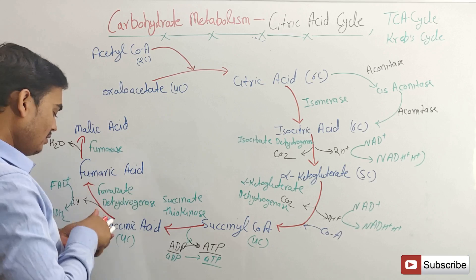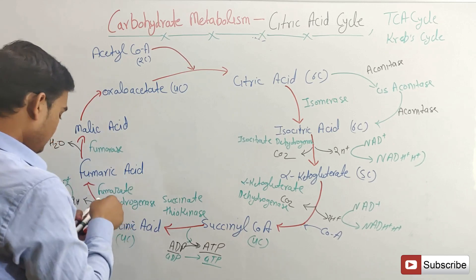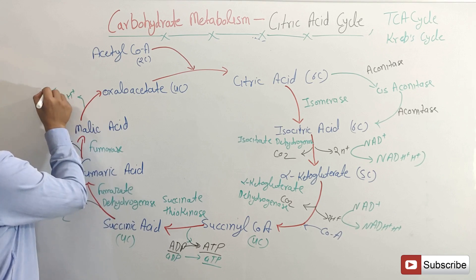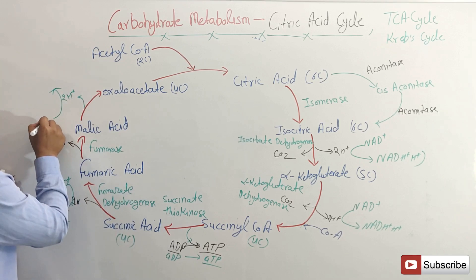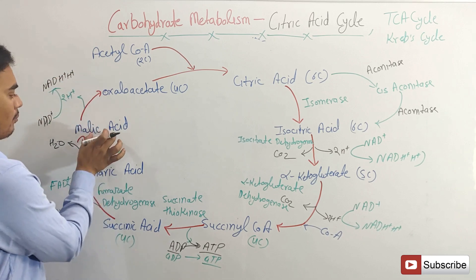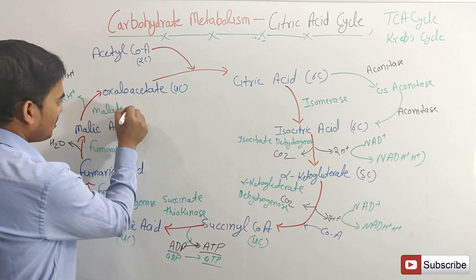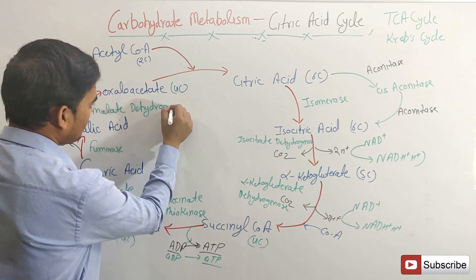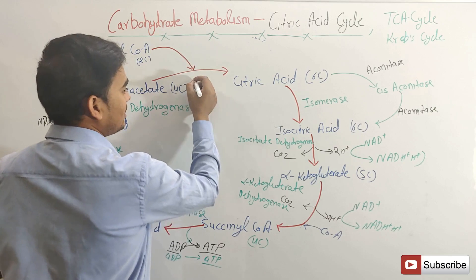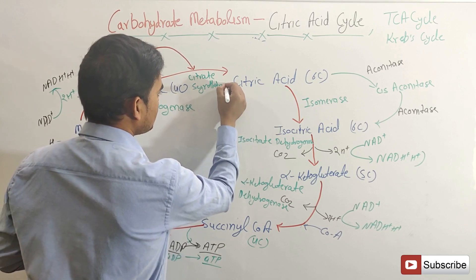This malic acid becomes oxaloacetate by the removal of hydrogen atoms. These hydrogen atoms are picked up by NAD⁺ and form NADH + H⁺. The enzyme used here is malate dehydrogenase. Also, when citric acid is synthesized at the start of the cycle, the enzyme used is citrate synthase.